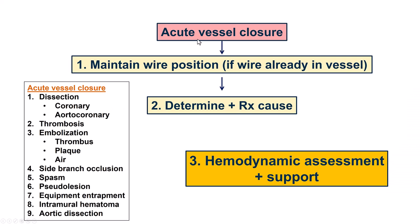What do we do if there is acute vessel closure? The first step is to maintain wire position if we have a wire in the vessel, which does not apply to our case since we had not wired the LAD to start with. The second step is to determine and treat the cause of the acute closure. There are several potential causes — the main ones are dissection, thrombus, or embolization. In our case, since this happened when the patient was undergoing wiring, this is most likely a wire-induced dissection of the LAD.